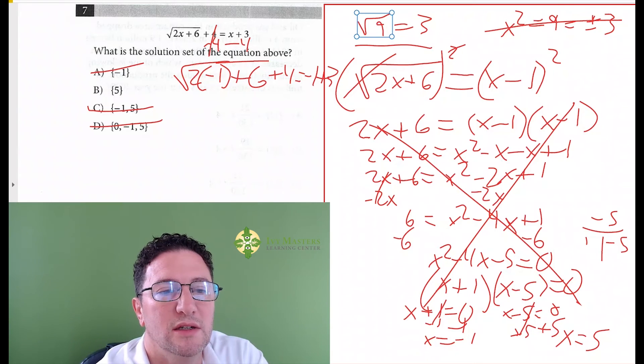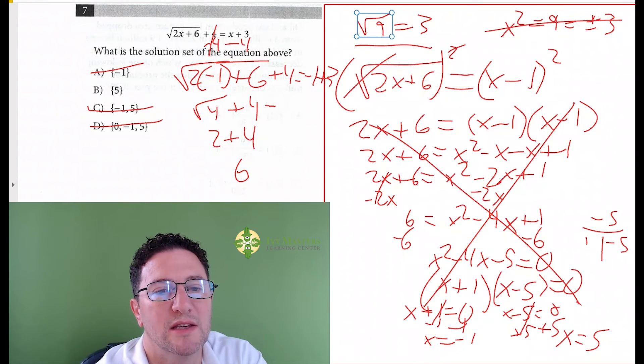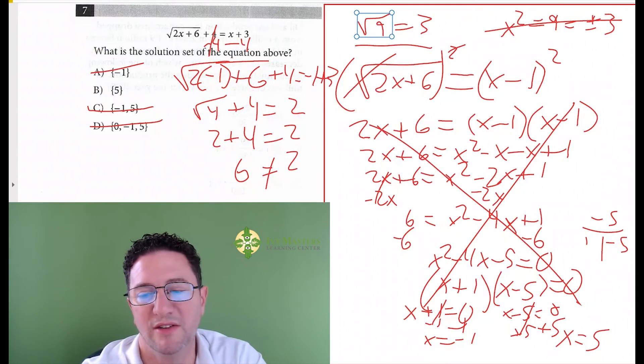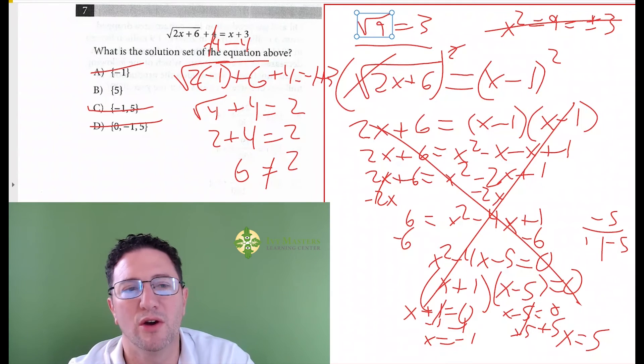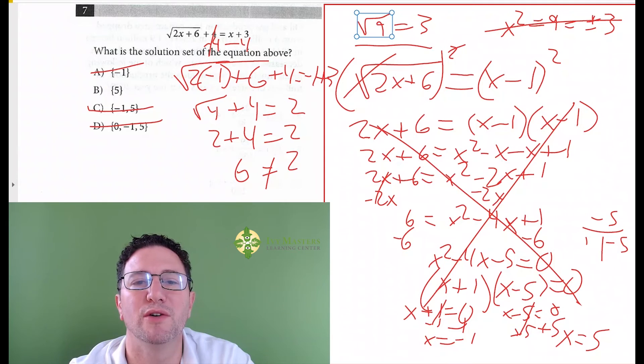And if you notice, if I plug negative 1 in here, I've got the square root of 2 times negative 1 plus 6 plus 4 equals negative 1 plus 3. And inside the root, you wind up getting the square root of 4 plus 4, which would be 2 plus 4, which would be 6 on that side. And you get that it equals 2, which just is not right.